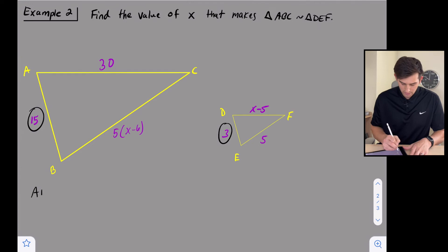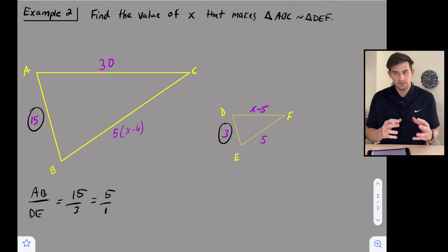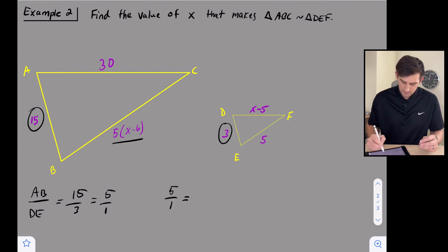Let's look at a side or two sides that are corresponding that have the measures listed. So here we can compare AB over DE and say this is 15 over 3, which is equal to 5 over 1. So I'm going to leave it as 5 over 1, that's my ratio. And so now let's compare, let's say 5 over 1 is equal to BC over EF. So let's do 5 times the quantity of X minus 6 over 5.